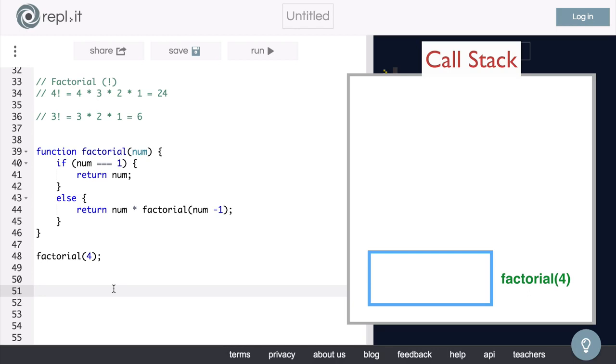So, in this function, num will be equal to 4. So, we have to go into our else statement, and what do we return? Well, we return 4 times our factorial function being called again with num minus 1, or 3.